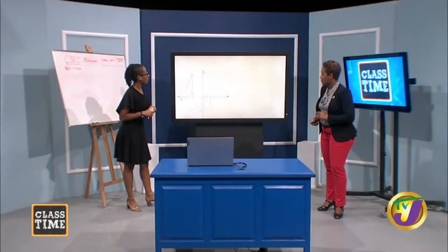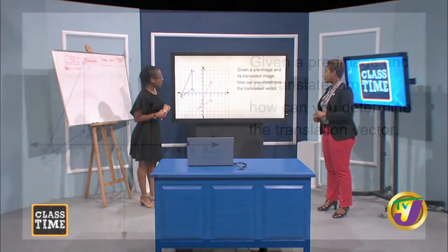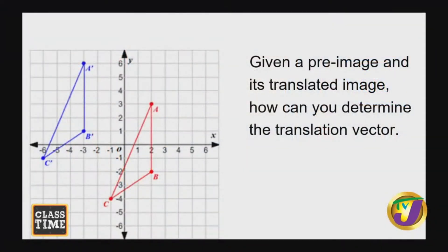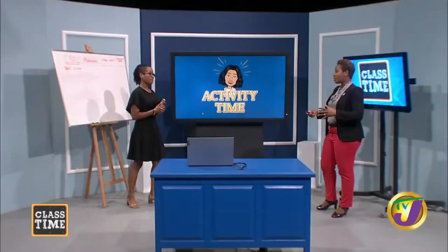Here we have the pre-image in red and the image in blue. Looking at the movement: 1, 2, 3, 4, 5 to the left and 1, 2, 3 upward. So 5 to the left and 3 upward. How would we represent this as a vector? It would be negative 5 as the top value — because it's left — and 3 as the bottom value. So the translation vector is negative 5, 3.